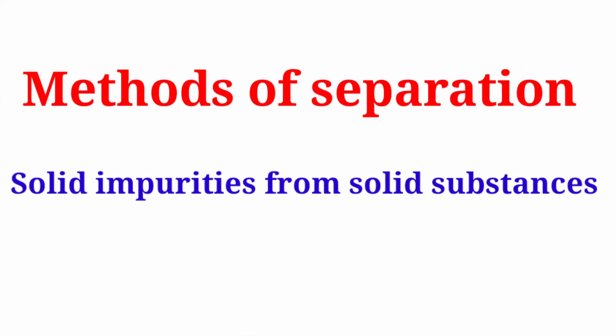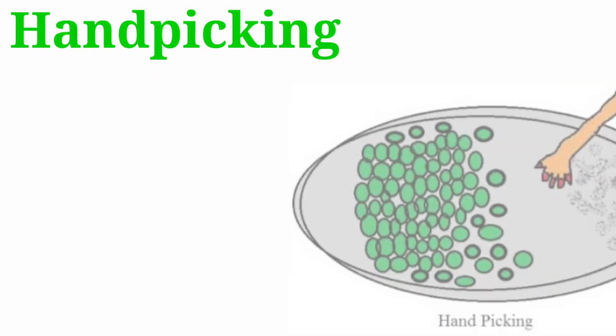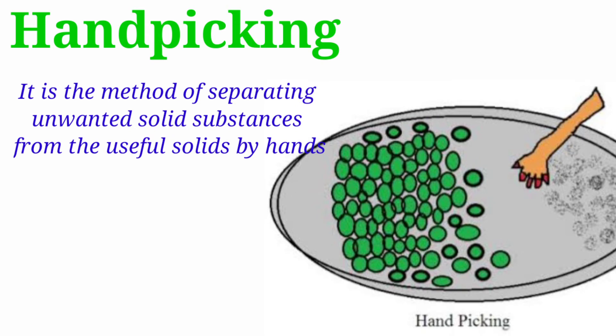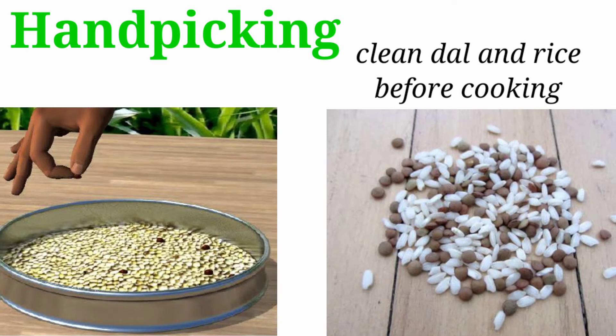Let's understand the different methods of separation of solids from solids. Hand picking is the method of separating unwanted solid substances from useful solids by hand. It is an easy way to separate undesirable substances from food items. For example, you may observe at home that your mother cleans rice before cooking and removes pieces of stones by hand.